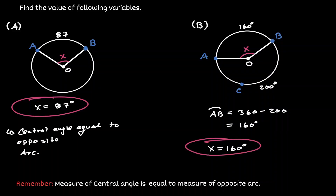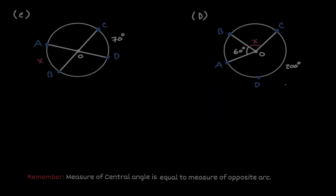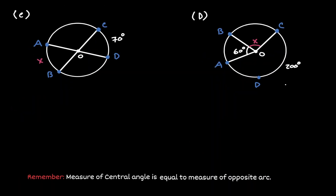Let's take a look at other examples. In example C, we want to find the measurement of arc AB. If arc CD has a measurement of 70 degrees, then we know that the central angle opposite to it will have the same measurement.